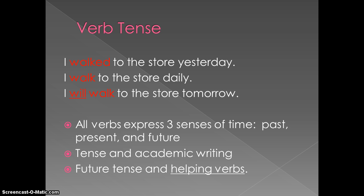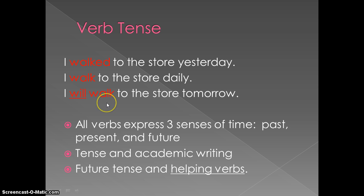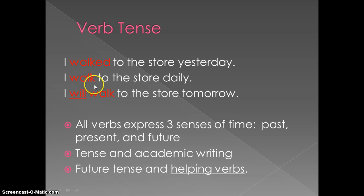Verb tense. There are three different tenses that verbs can be: past, present, and future. This should hopefully be nothing new to you. In the first example, 'I walked to the store yesterday' — the -ED ending signifies this is in the past. 'I walk to the store daily' is present. 'I will walk to the store tomorrow' is future. Whenever you have a future tense, you'll often have what is called a helping verb. 'Will' counts as part of the verb — that's your complete verb right there.